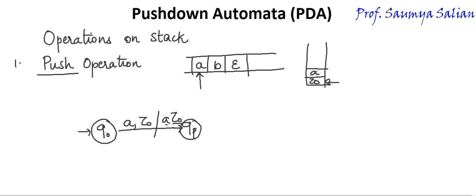A is pushed onto the stack. The read header will now shift one position to the right. On reading B with stack top A, push B onto the stack. Read state Q2. This is how we perform push operation.